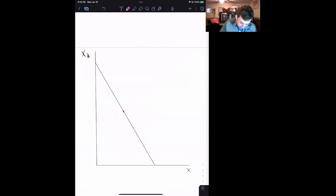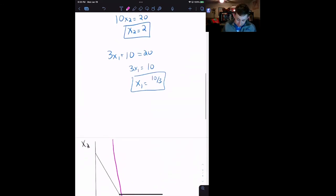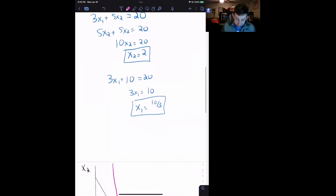And we know from our previous knowledge that this indifference curve is going to come in and be tangent to this budget line at exactly one point. This is our indifference curve, our utility function.